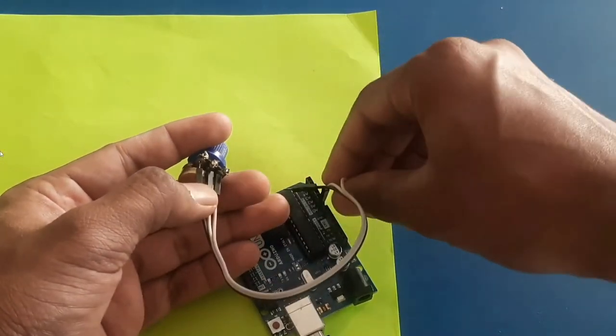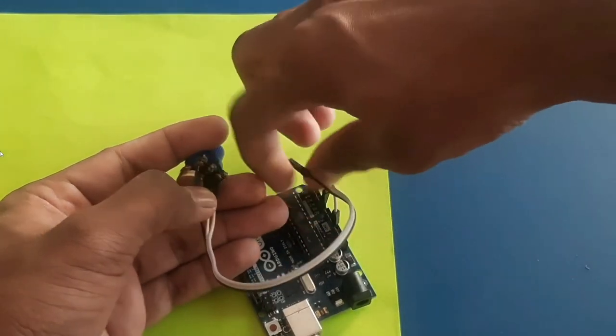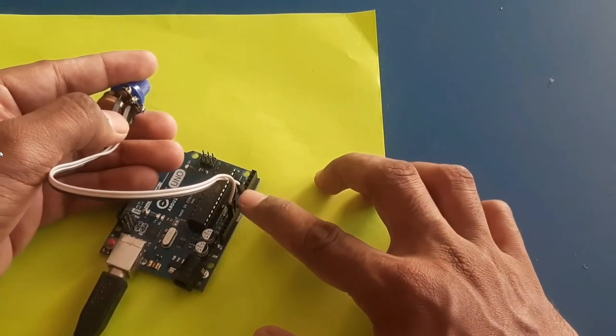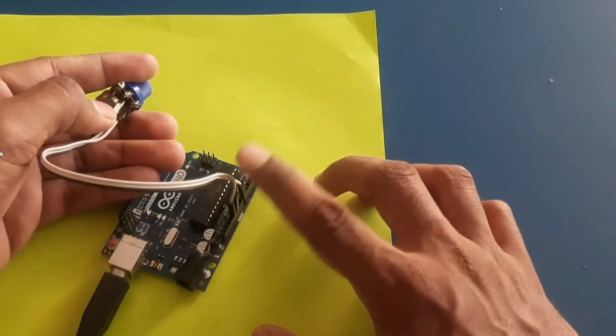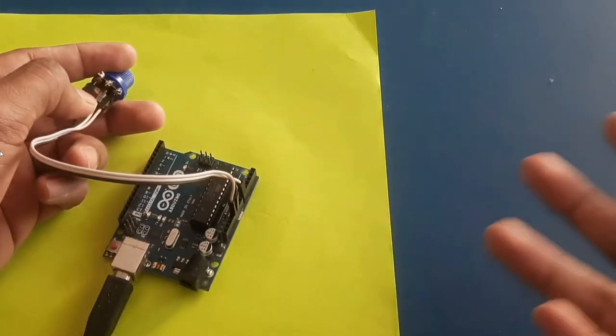And the extreme left and right pin to 5 volt and ground. So our circuit is completed. Only we need to connect middle pin to analog pin. So let's move to coding section and see the value.